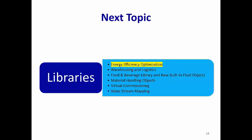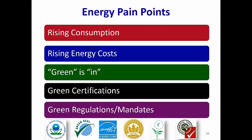Our next topic covers several libraries that you may find useful. We'll start with Energy Efficiency Optimization. Energy pain points include rising energy consumption and cost. Also, green is in with consumers and regulators. Additionally, green certifications like the Energy Star Seal and EPA regulations and mandates are becoming more important.